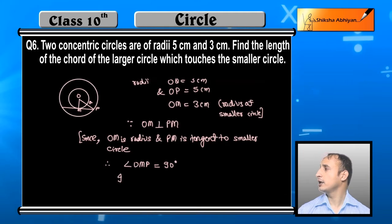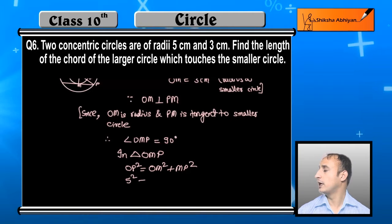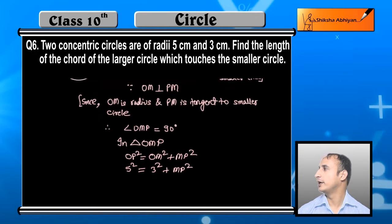Now in triangle OMP, you can see, by Pythagoras theorem: OP square is equal to OM square plus MP square. OP is the hypotenuse which is 5 cm, OM is 3 cm, and MP we have to find out.